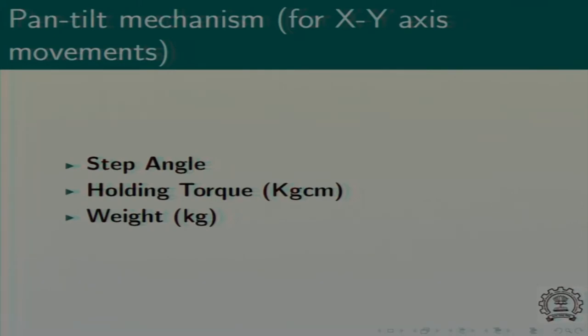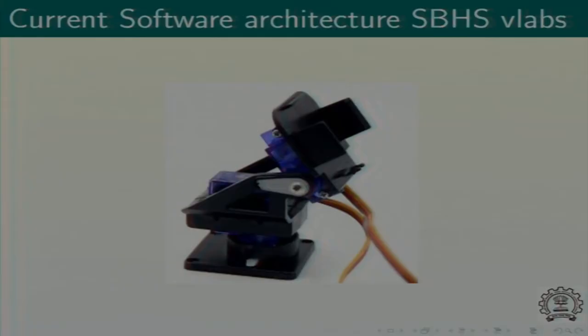Then of course the weight and holding torque, because you want to hold that position long enough for the briefing to finish. This is how a typical pan-tilt mechanism looks like — there are two motors, one moves in one axis and the other moves in another axis. It's a typical setup and is available in the market.